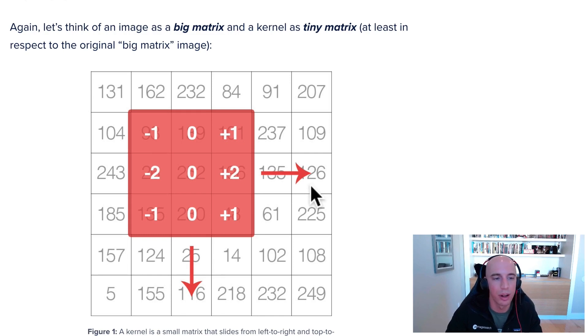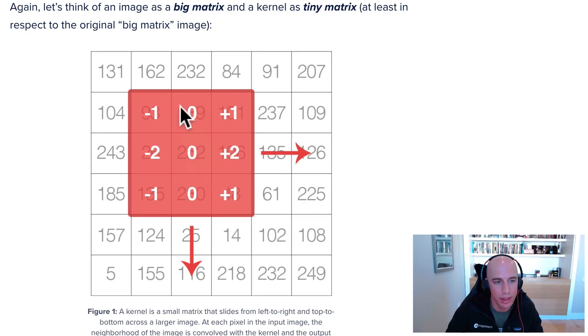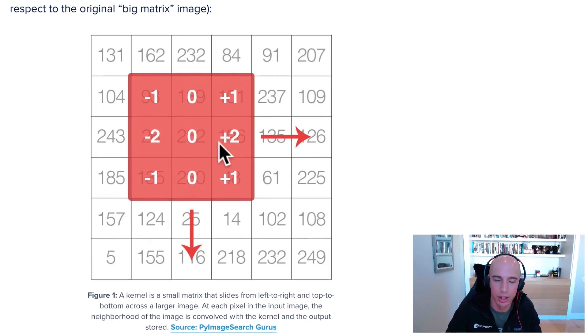Of course, there's ways to optimize this process using linear algebra libraries, and if you're training a deep neural network, you'd be using your GPU and these filters will be learned automatically. But the concept of convolution is pretty simple when it's explained to you.